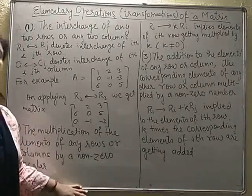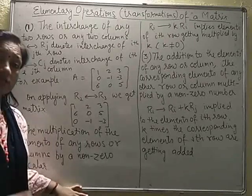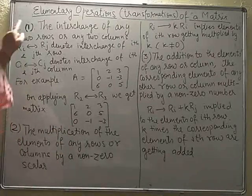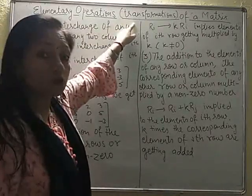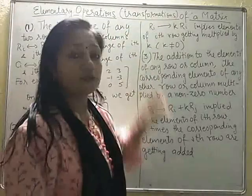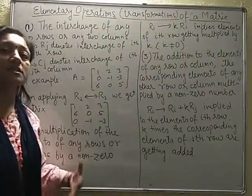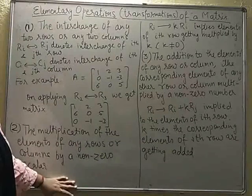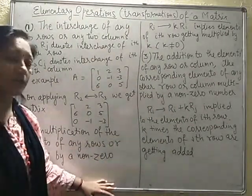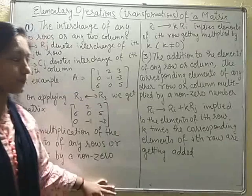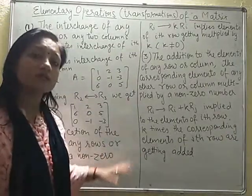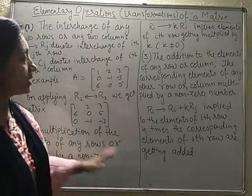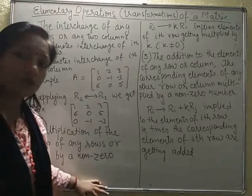We move forward with certain operations — elementary operations which can take place in a matrix. The topic we are discussing today are elementary operations, which can also be called transformations of a matrix, and how operations can be applied on the matrix. There are three operations along the rows which can be applied, and in the same way, three column operations — so in total, six elementary operations. I have written all those on the board and will explain them as we go through.